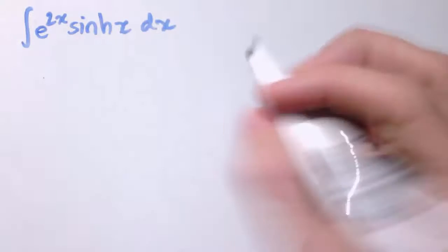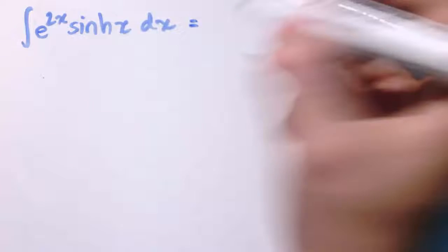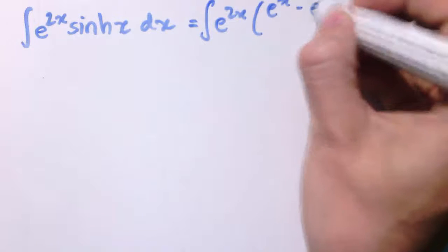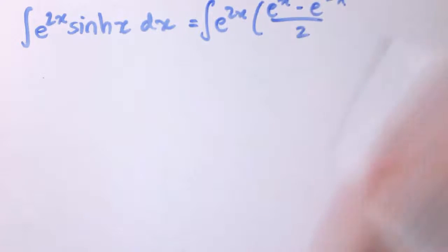For example, the integral of e^(2x) times sinh(x) dx. I'm just going to replace sinh(x) with its exponential form. So that's e^x minus e^(-x), all divided by 2.